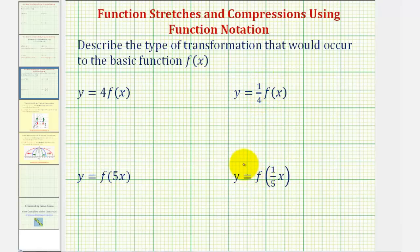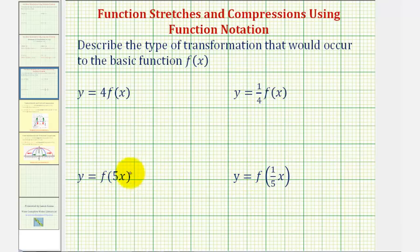In the second two examples, we have y equals f of five x and y equals f of one-fifth x. Notice in this case, we're multiplying x by a constant to find the input of the function. And since the inputs lie along the horizontal axis, these two will either horizontally compress or horizontally stretch the parent function f of x.